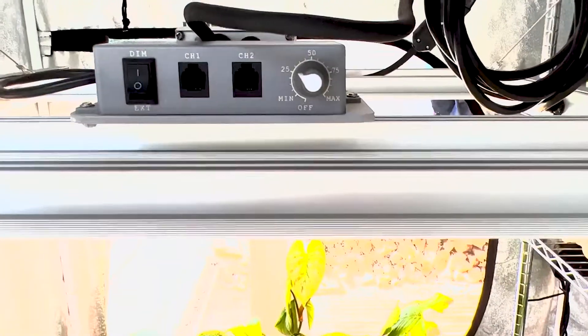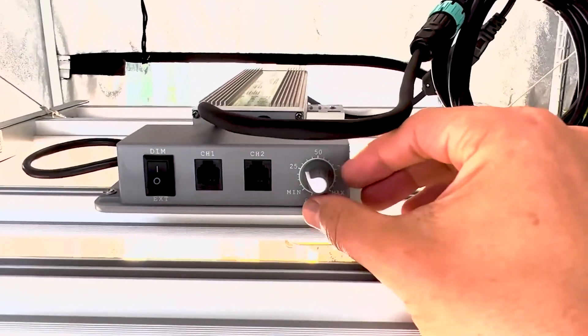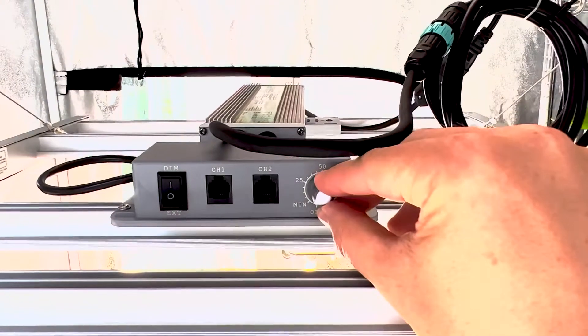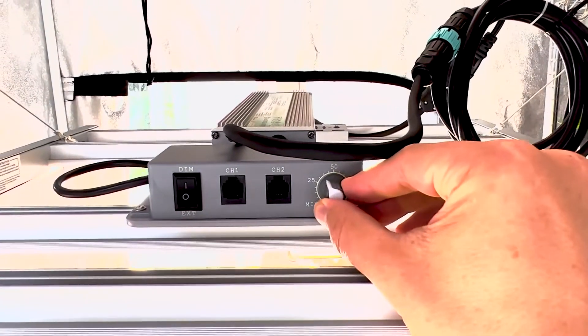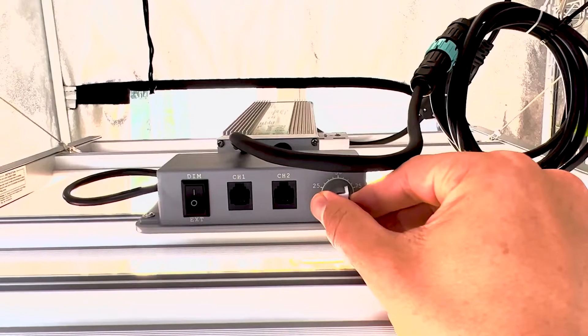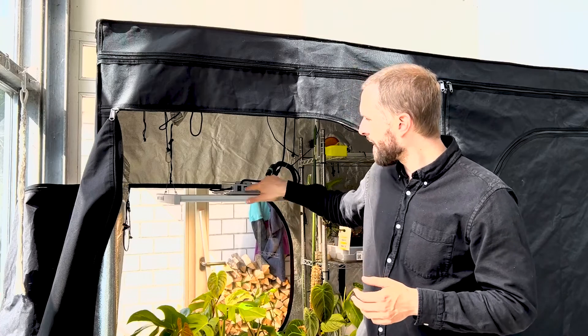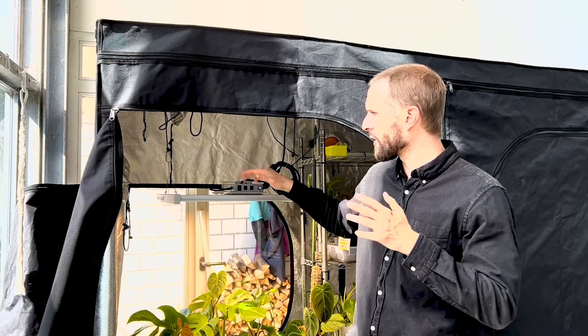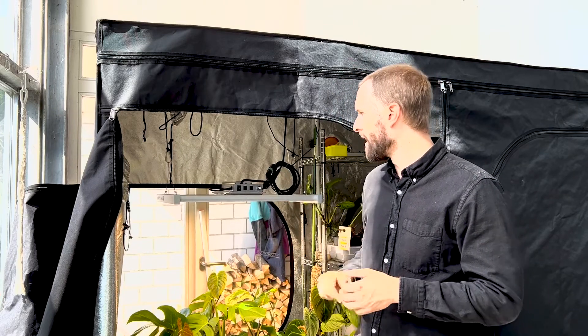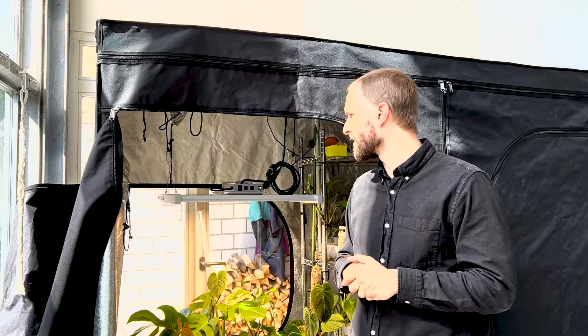The Mars FC-3000 grow light comes with a dimmer so you can set between 10 and 100%. You can really play with the height and also the dimmer so you can have the optimal light output that you want, and you can measure that and adjust it accordingly which is also great. It has a daisy chain feature so you can link up to 30 other of these grow lights and you can dim it with one master which is a great additional feature.